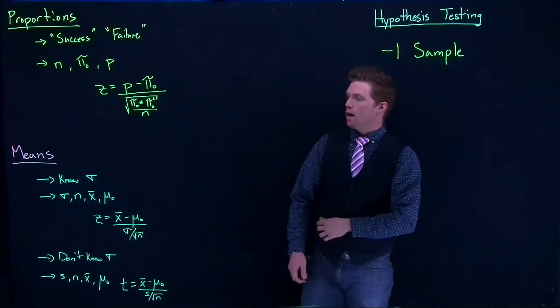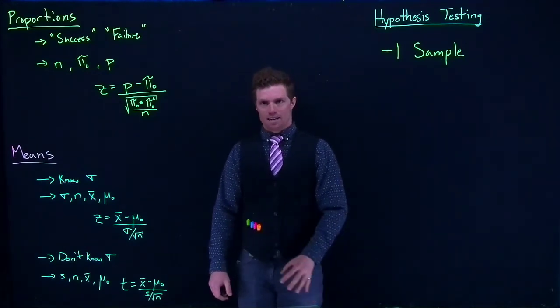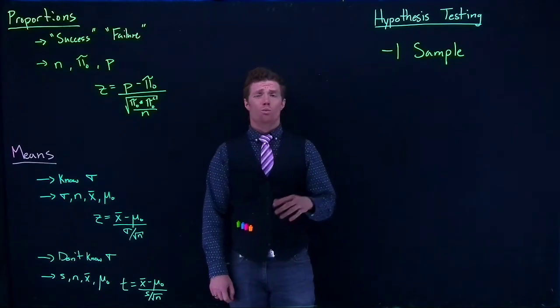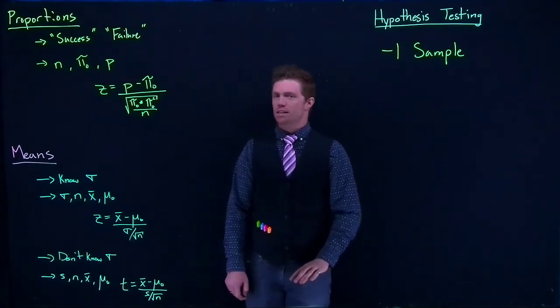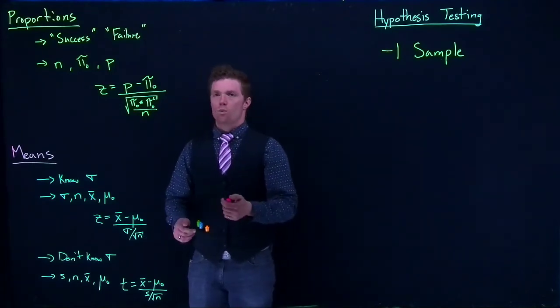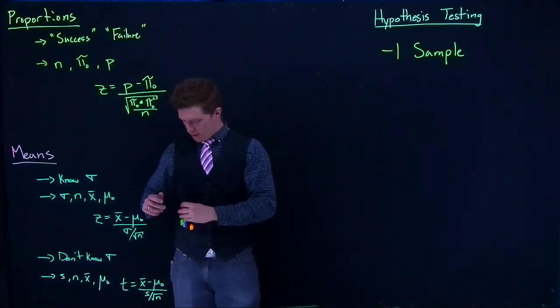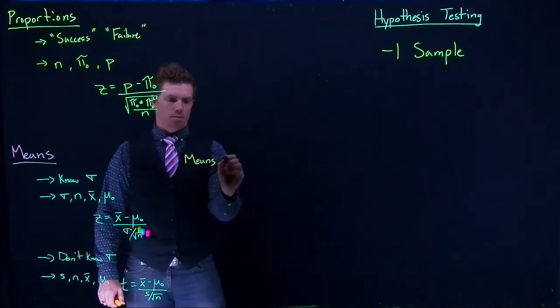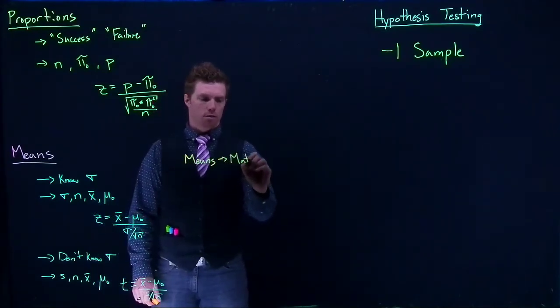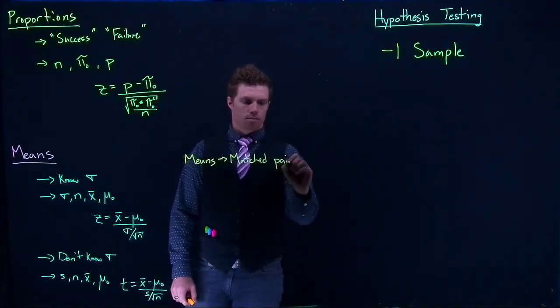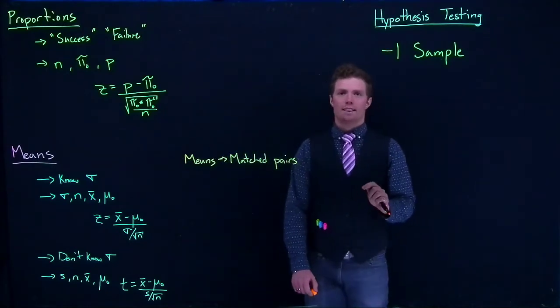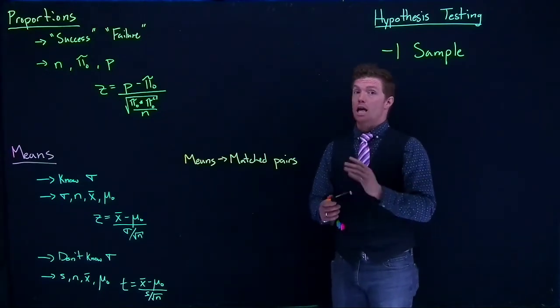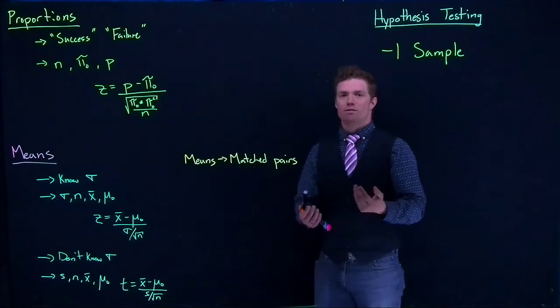Now there is one other means test that we can do that we haven't covered yet that's really unique. Because it kind of straddles the line between one sample and two sample hypothesis testing. But it's better if we think about it as a one sample means. And this is what is called, so this is still means, but it's known as matched pairs. And what we're looking at is we're looking at the average distance between two values. So we use this a lot in twin testing, especially in pharmaceuticals.